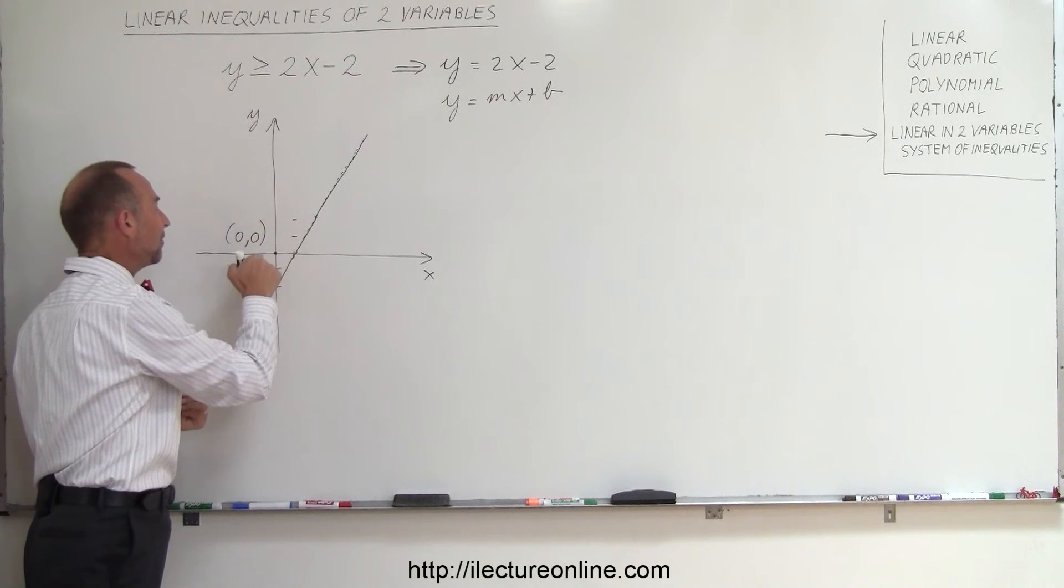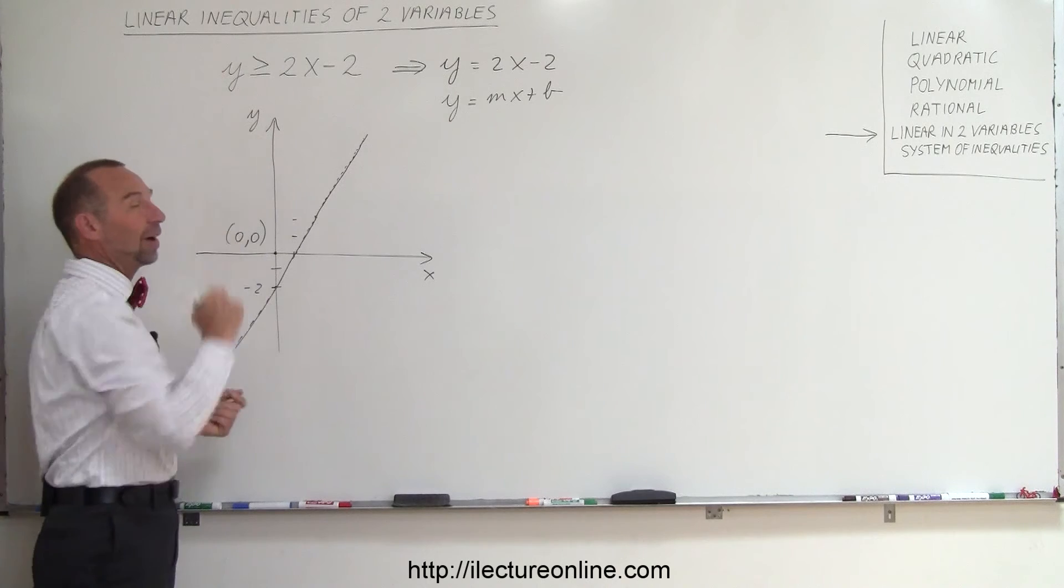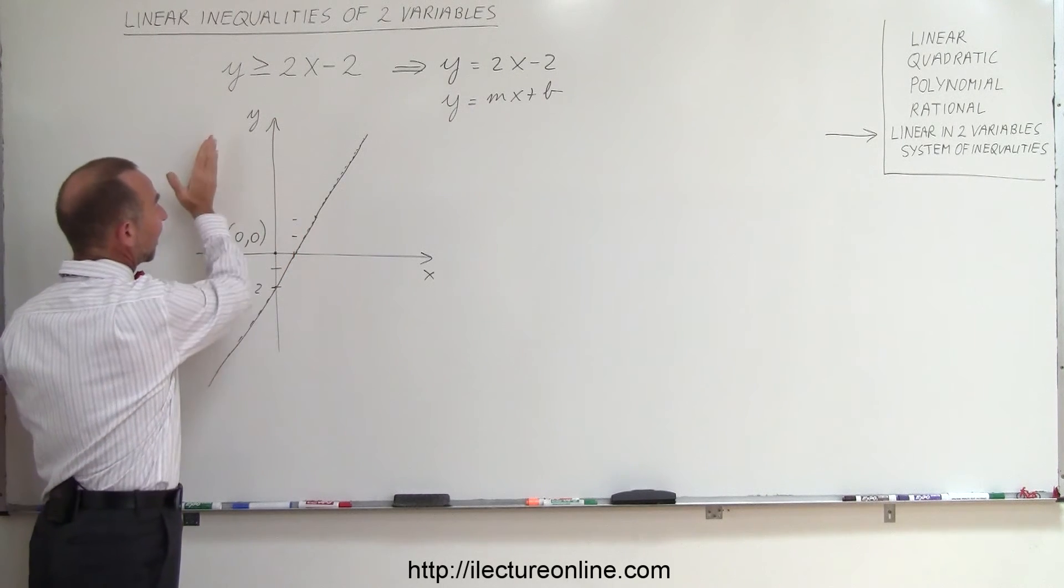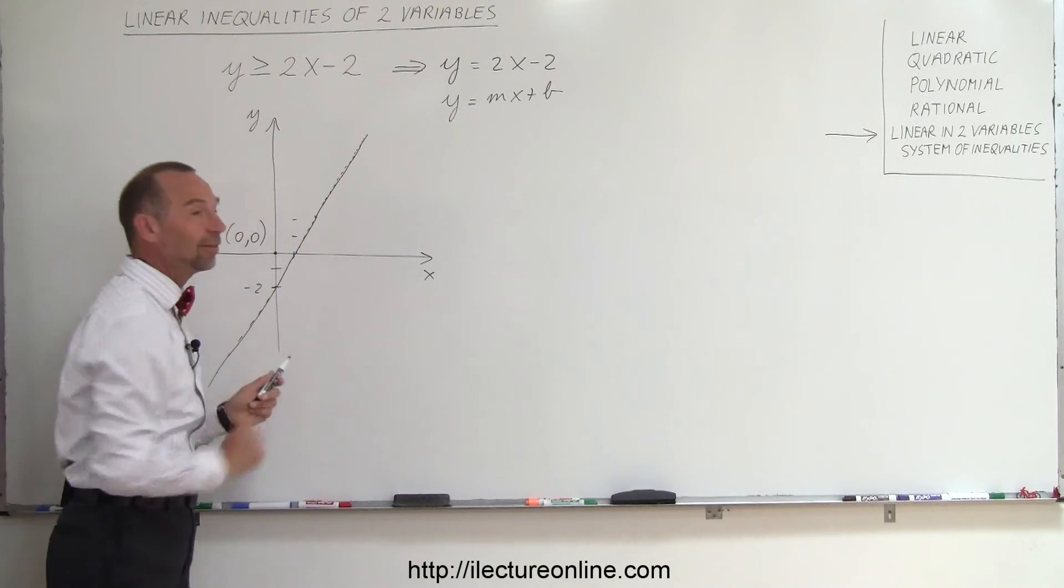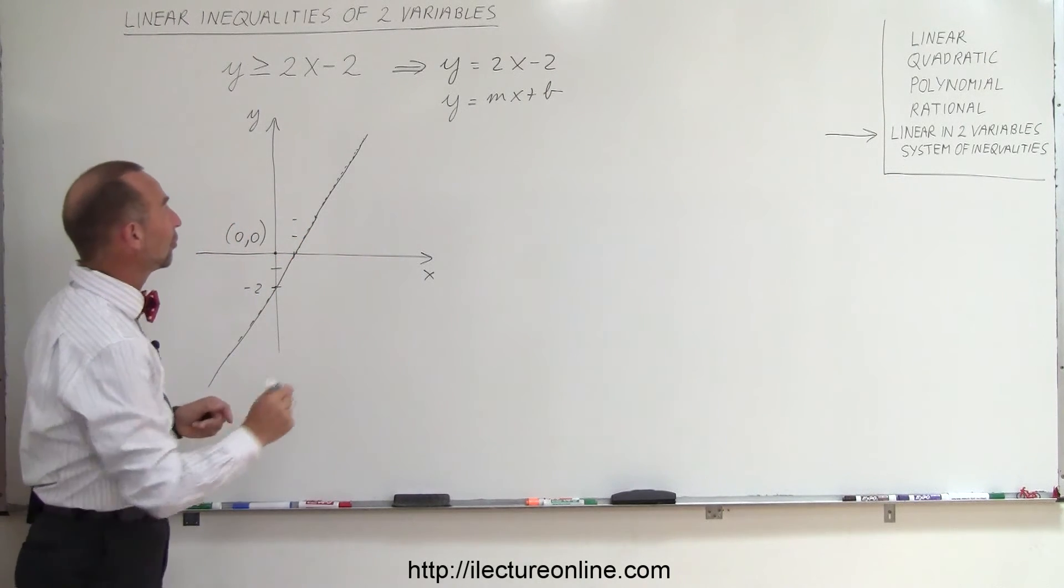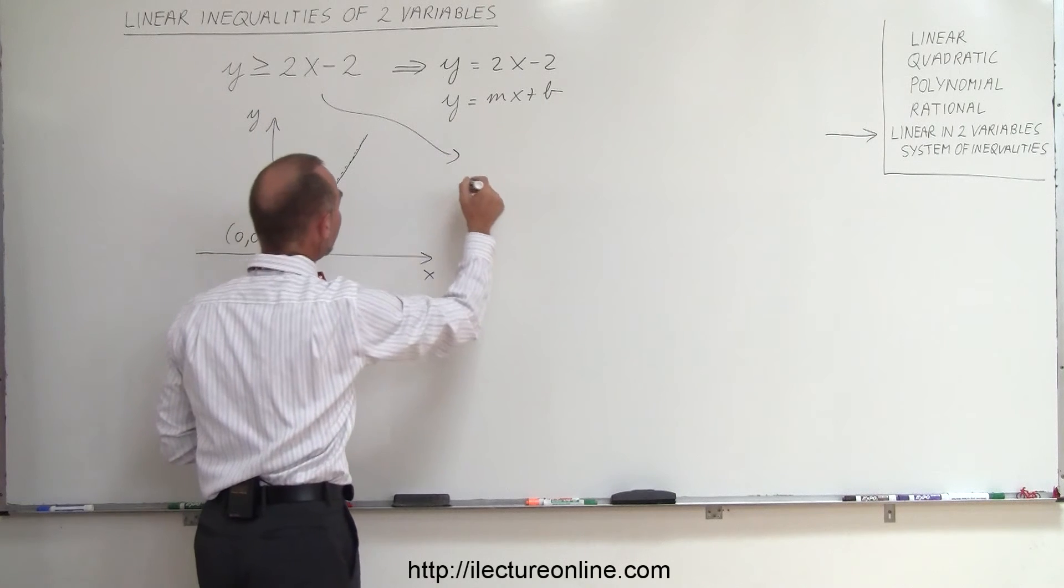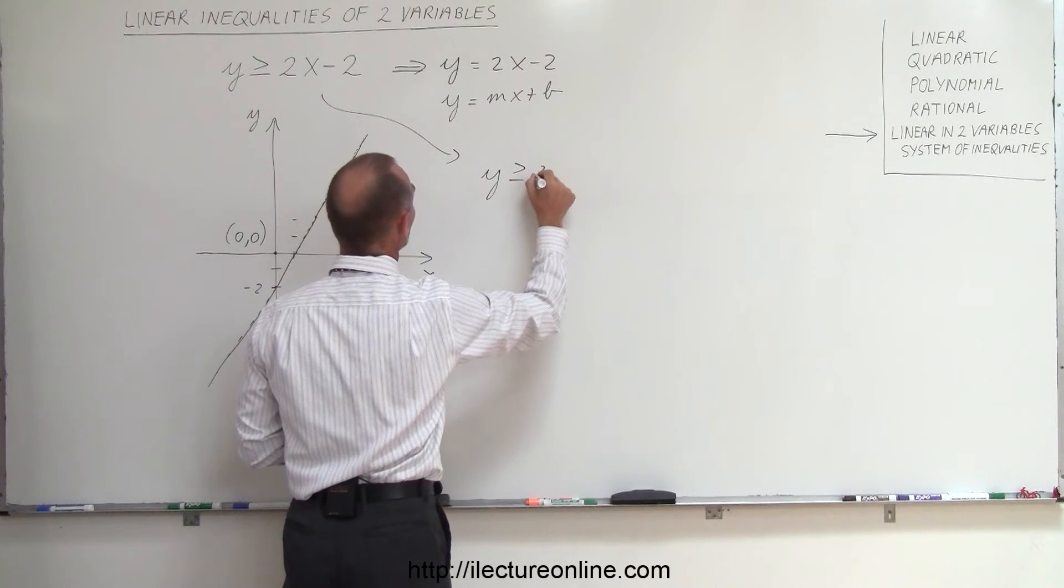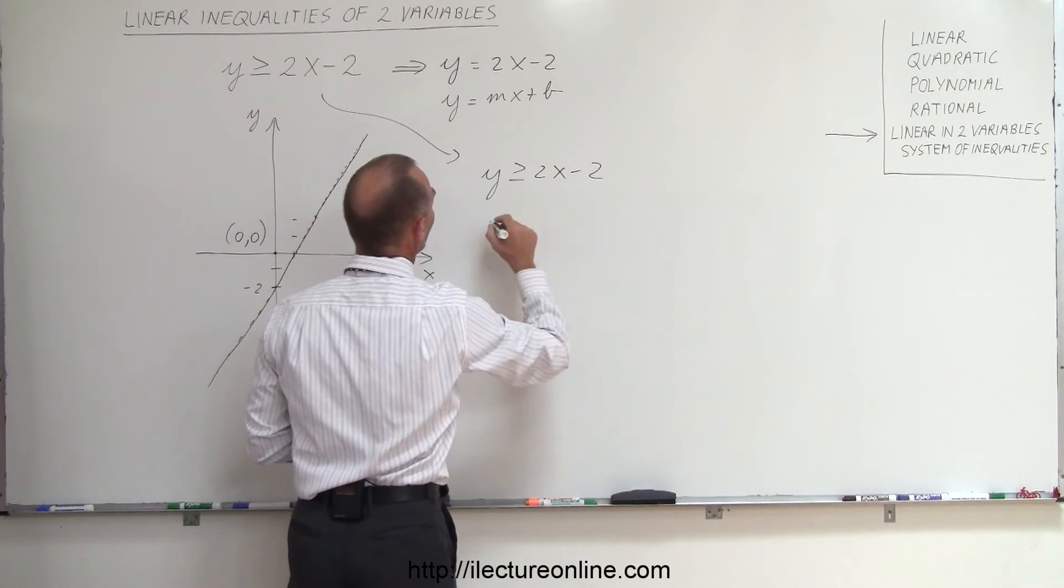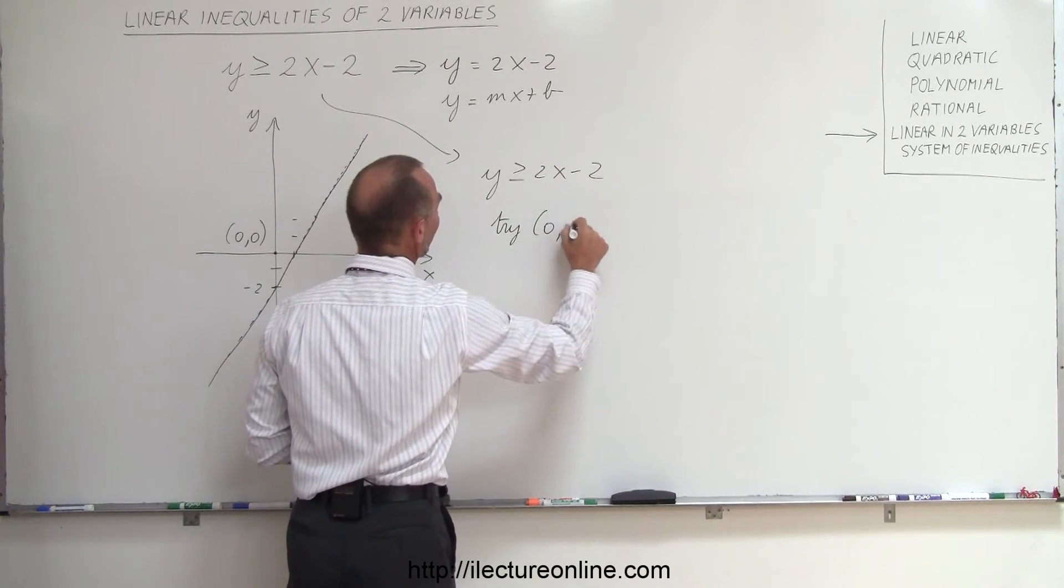So let's use the point 0, 0 and see if that point satisfies the solution. If it does, then all the other points on that side satisfy the solution. If it doesn't, then it's all the points on the other side of the line that satisfy the solution.